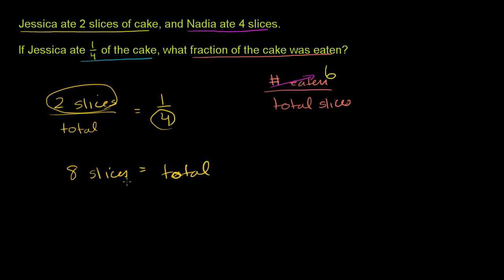So we have eight slices in total, and that makes sense. Two over eight, two over eight is the same thing as 1 fourth. Two slices is exactly 1 fourth of eight slices. So our total slices are eight.